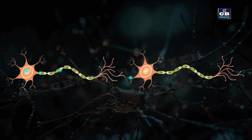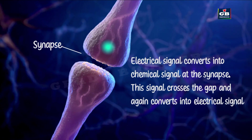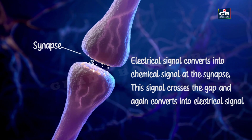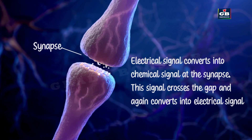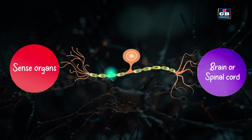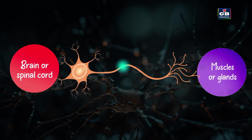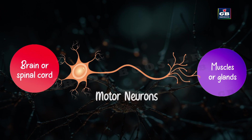Neurons are not physically connected — there is a small gap called a synapse. At the synapse, the electrical signal turns into a chemical signal. This chemical crosses the gap and turns back into an electrical signal in the next neuron. There are two types of neurons: sensory neurons carry messages from sense organs to the brain or spinal cord, while motor neurons carry messages from the brain or spinal cord to muscles or glands.